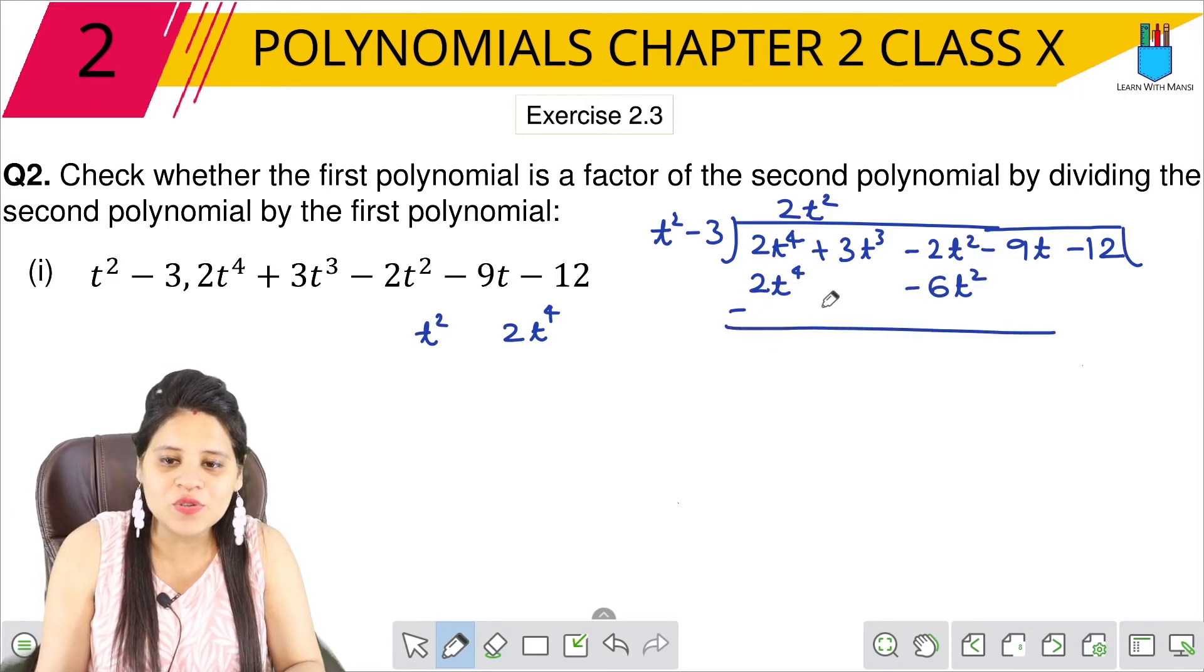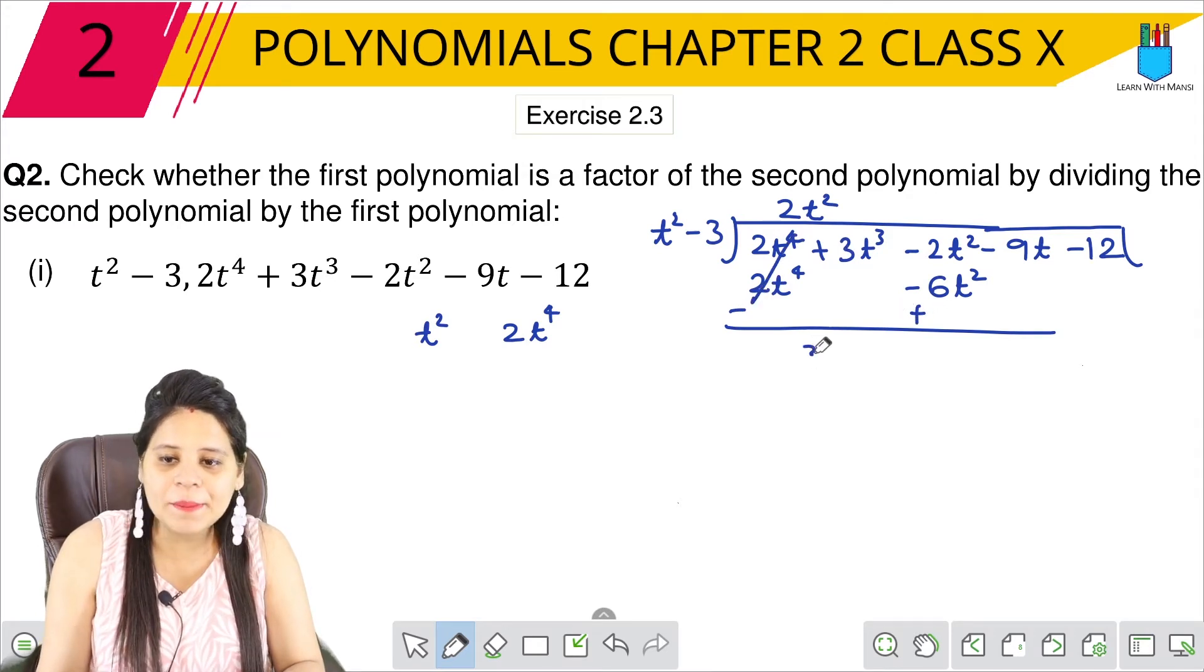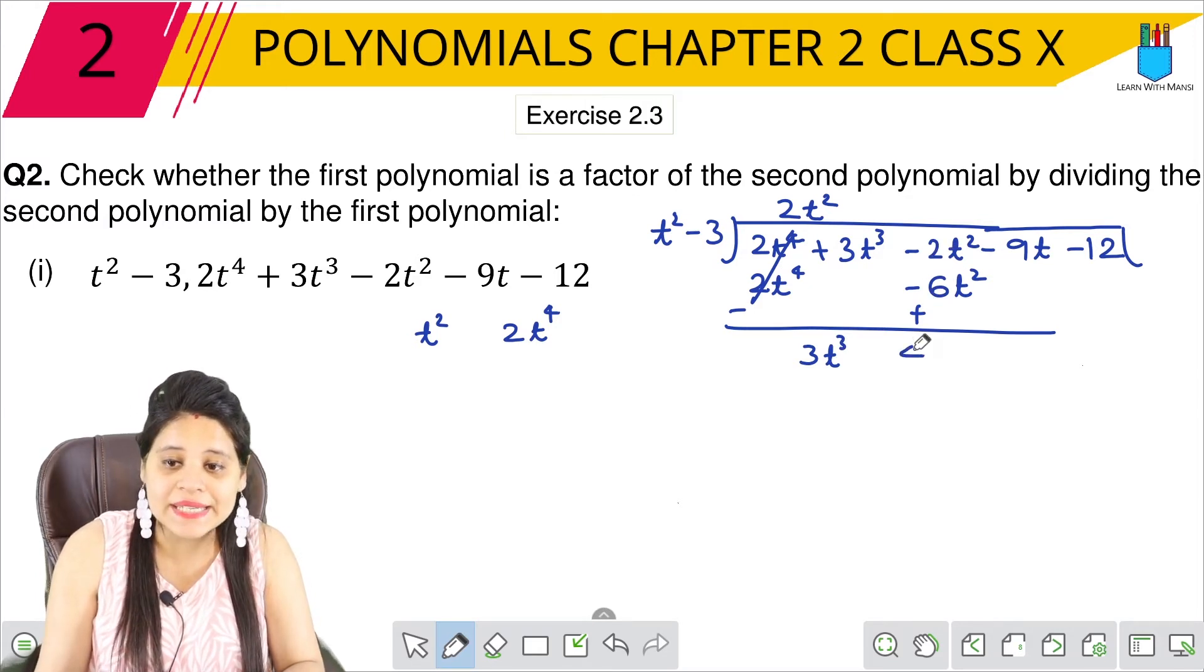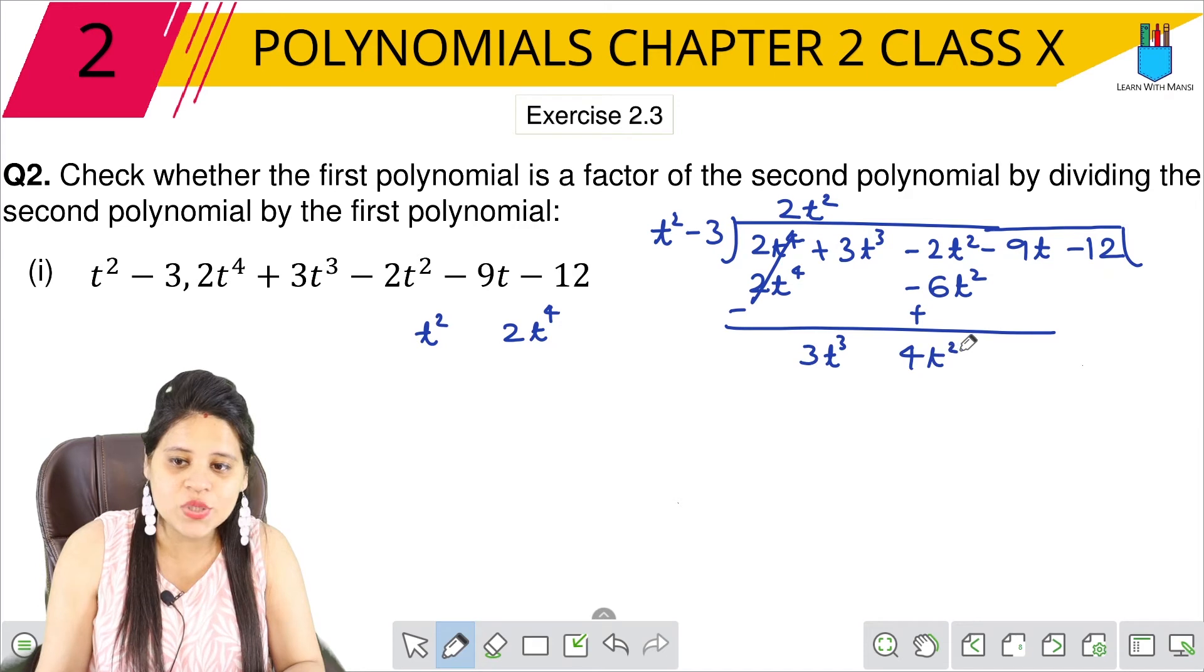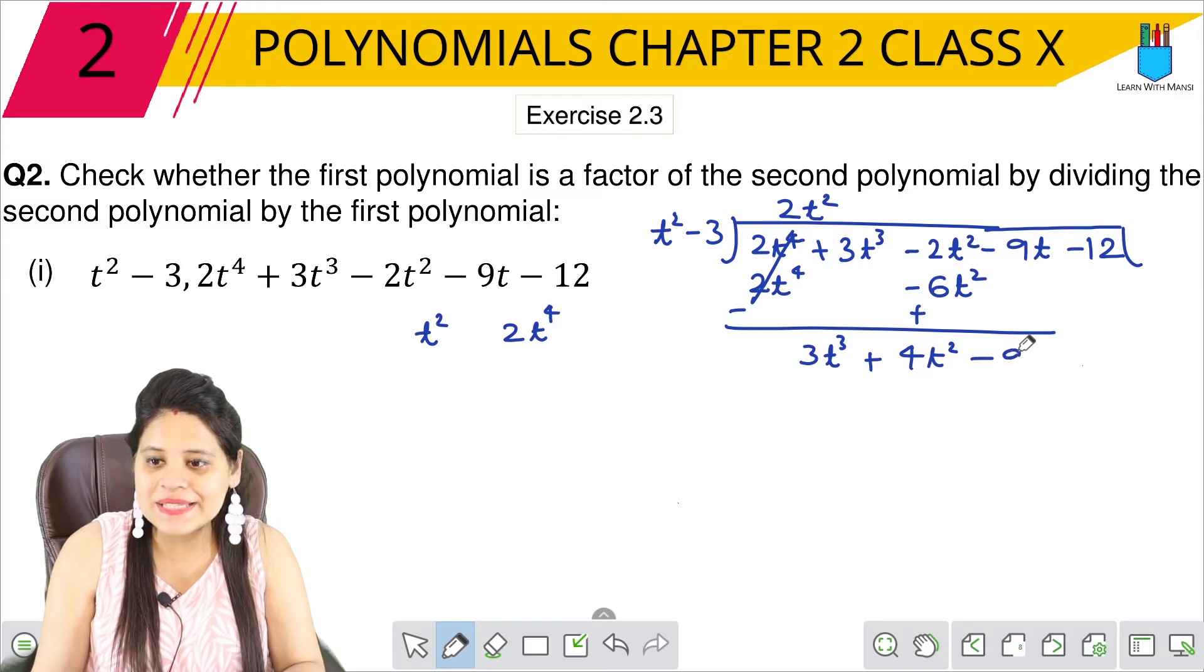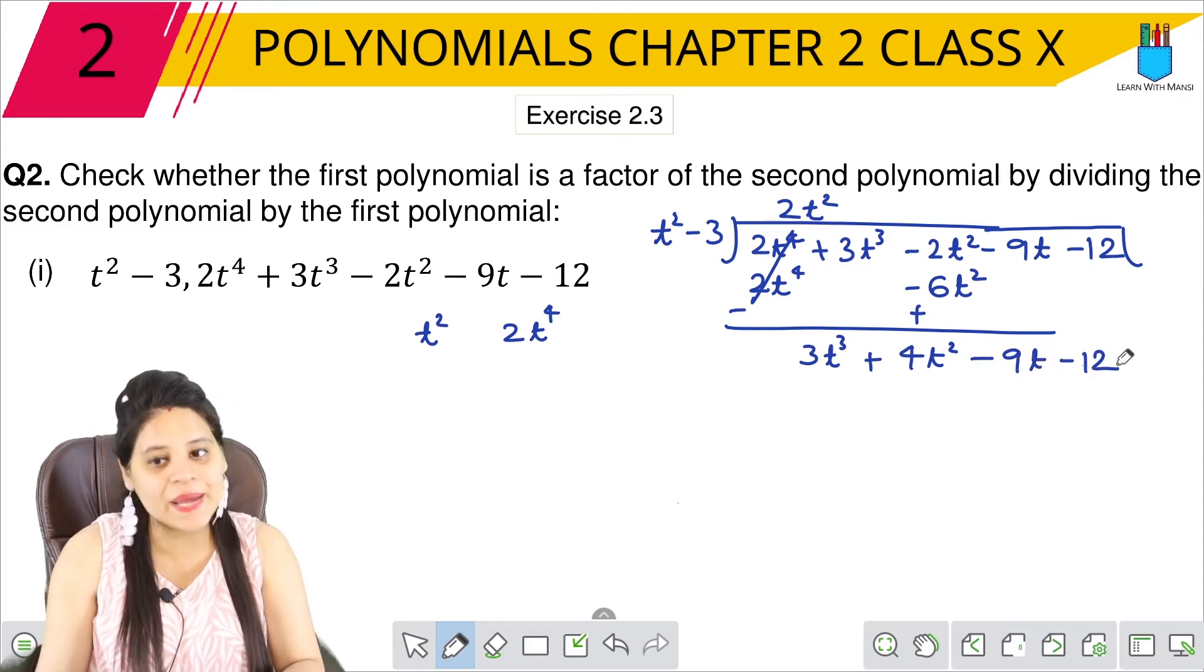In the next step, this will be minus, this will be plus. So cancel. Here we have 3t³ and this will be plus minus minus. We will do 2 - 6, which is 4t². 6 with this plus sign, so here plus will come, minus 9t minus 12.